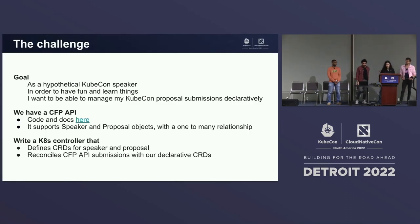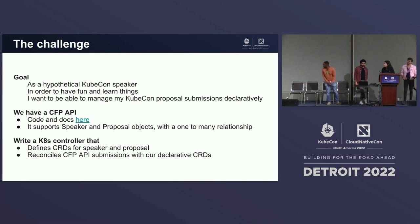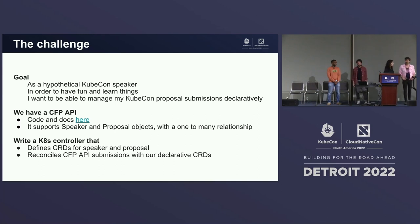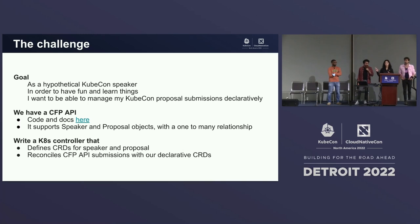Since this tutorial is on how to write a reconciler, we need something for a controller to reconcile. Here's the challenge for today: as a hypothetical KubeCon speaker, in order to have fun and learn things, I want to be able to manage my KubeCon proposal submissions declaratively. We've created a CFP API — a mock call-for-papers API. The code and docs are in a link we'll show on the next slides, and you can also find the presentation on Sked. We'll have a QR code and Bitly link in a moment.